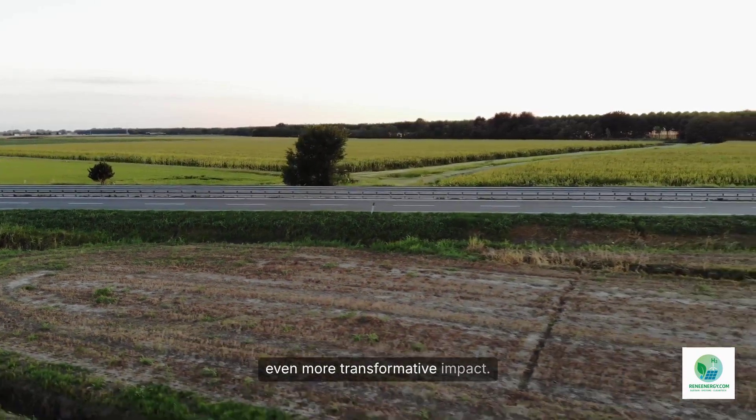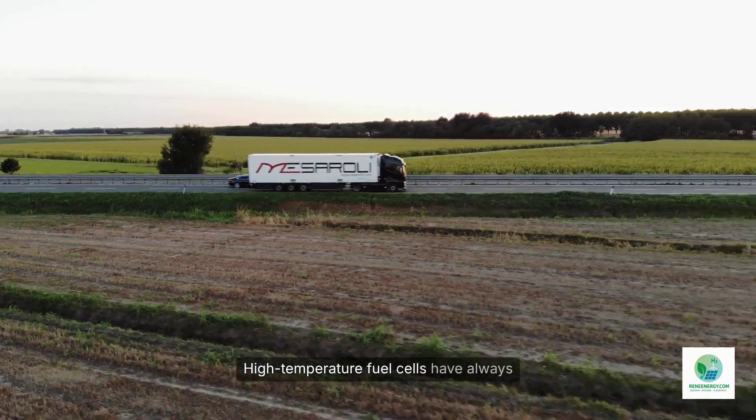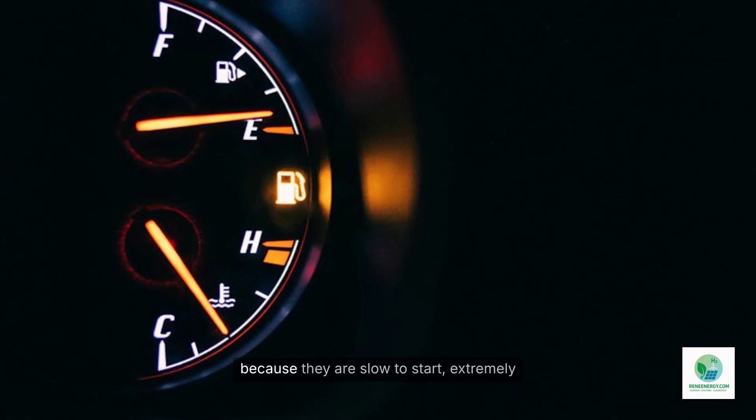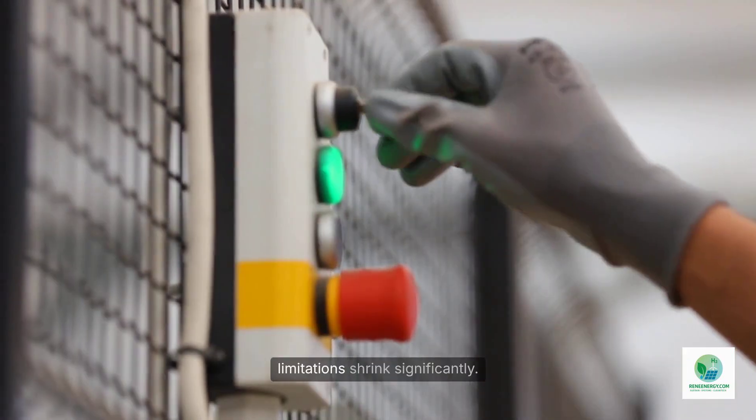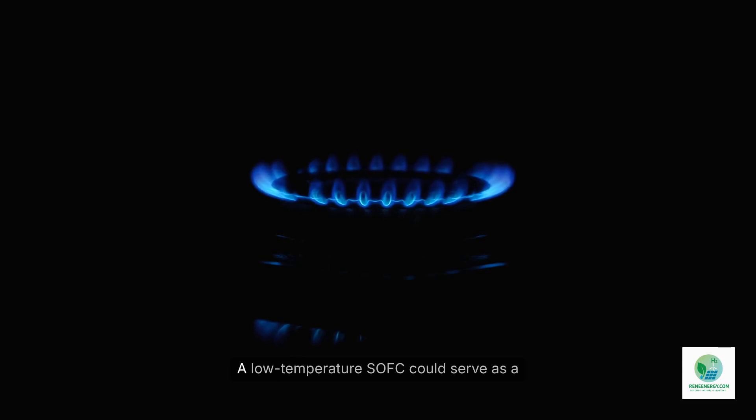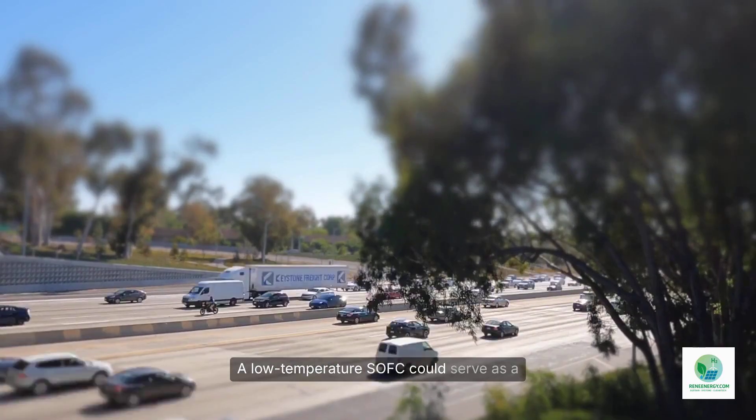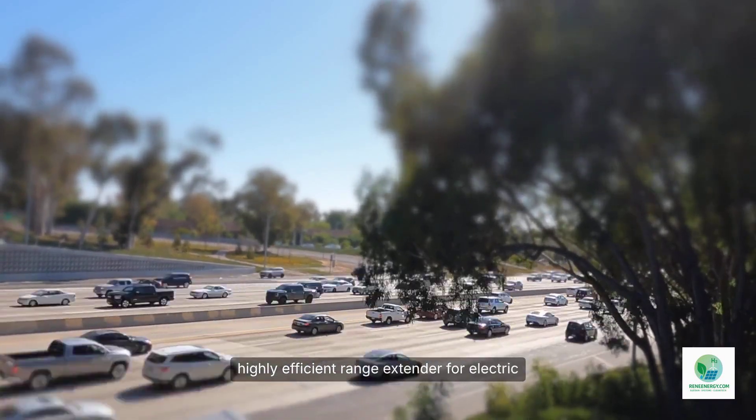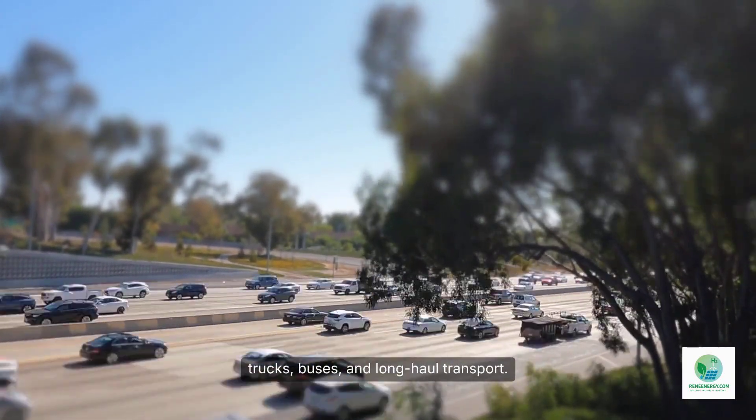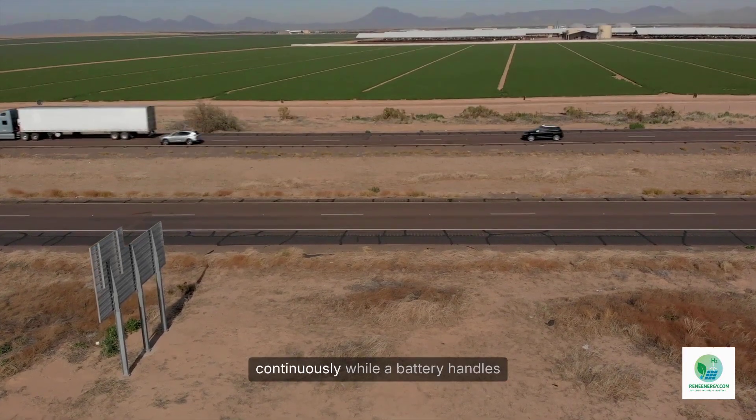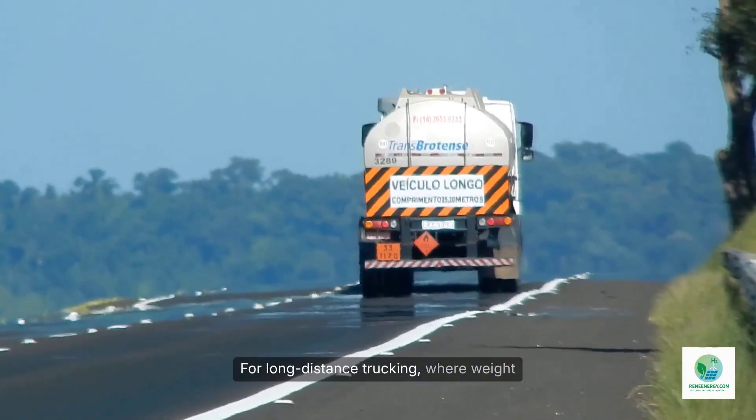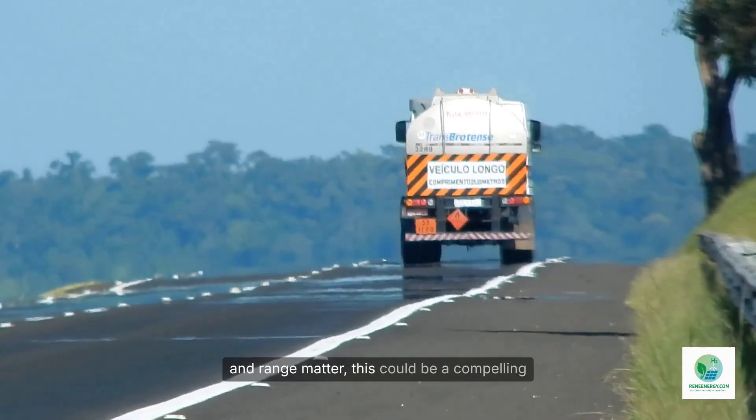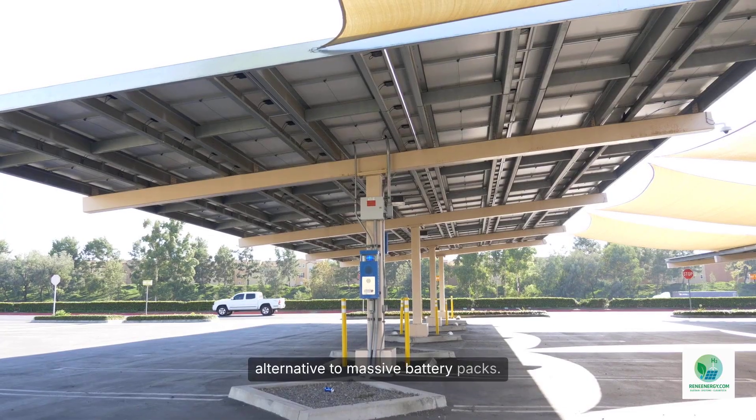Transportation could see an even more transformative impact. High temperature fuel cells have always been difficult to use in mobile platforms because they are slow to start, extremely hot, heavy, and sensitive to vibration. But at 300 degrees Celsius, those limitations shrink significantly. A low-temperature SOFC could serve as a highly efficient range extender for electric trucks, buses, and long-haul transport. It could generate electricity continuously while a battery handles acceleration and dynamic loads. For long-distance trucking, where weight and range matter, this could be a compelling alternative to massive battery packs.